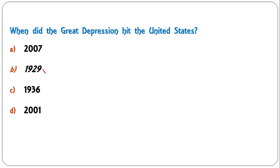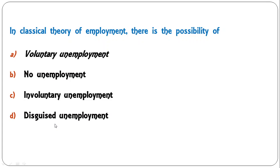Next question: when did the great depression hit the United States — 2007, 1929, 1936, or 2001? The correct answer is B — 1929, when the United States was hit by the great depression.